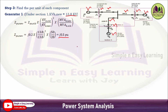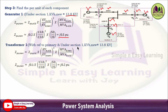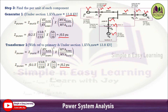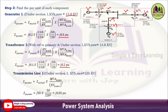Similarly, for transformer T1 referred to the primary side (section 1, base kV = 13.8 kV): Z_pu_new = j0.1 × (13.8/13.8)² × (50/25) = j0.2 per unit. For transmission line 1 in section 2 (j50 ohm), use Z_pu = Z_actual × MVAB_new / KVB_new²: j50 × 50/220² = j0.05 per unit.